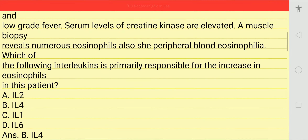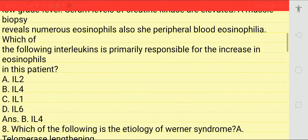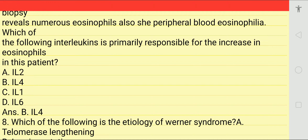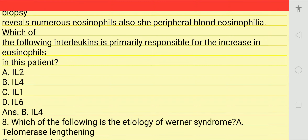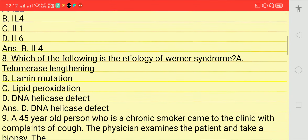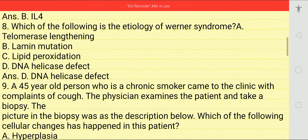Which of the following interleukin is primarily supposed to increase eosinophils? Options: IL-1, IL-2, IL-4, IL-6. Answer is B — interleukin 4.